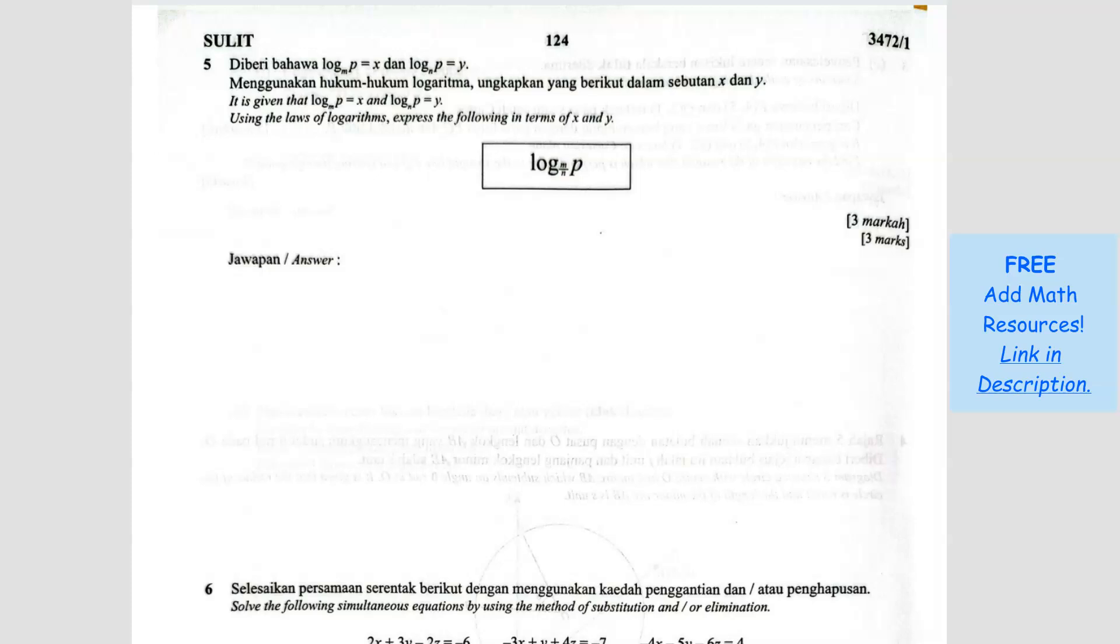Given that log P base M equals X and log P base N equals Y. Let me rewrite this. They are saying that log P base M equals X and log P base N equals Y. So this is what is given here.